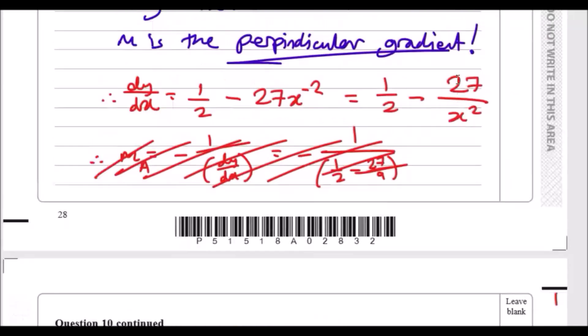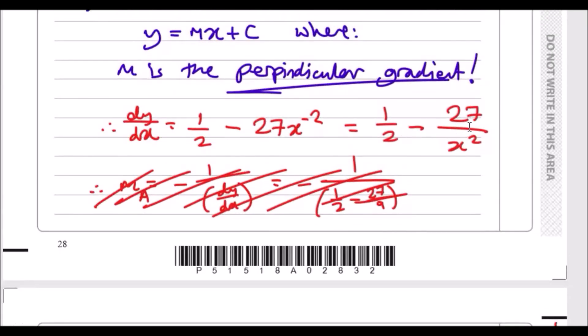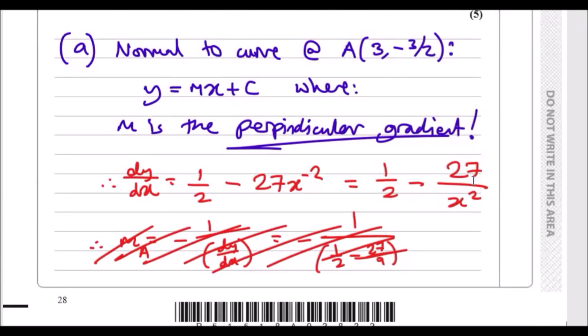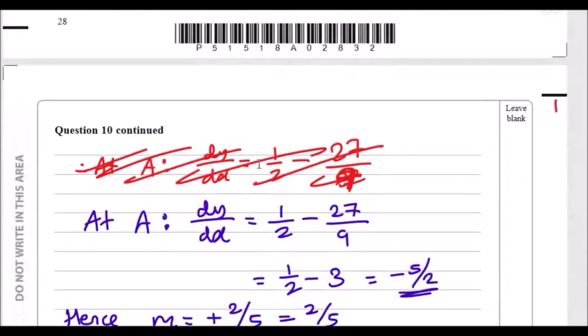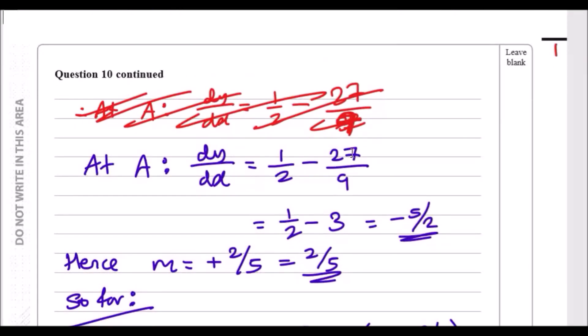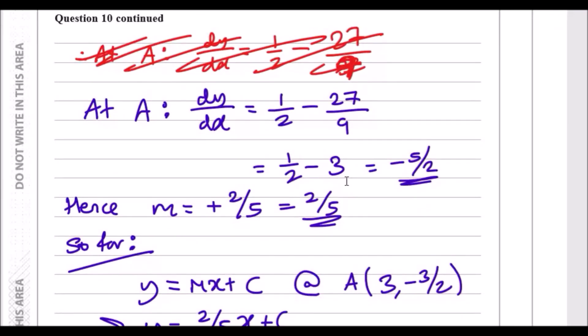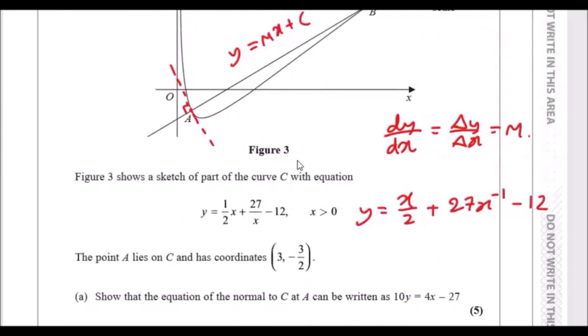Now plug the value 3 inside to find the actual value dy/dx. When you do that, you get half minus 27 over 3 squared, which is 9. So that becomes 27 over 9, which becomes 3. So half take away 3 is minus 5 over 2. That's the value dy/dx, so that's the gradient of this line here.